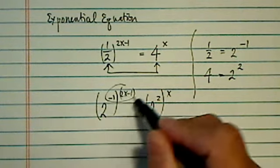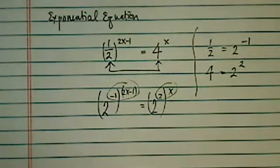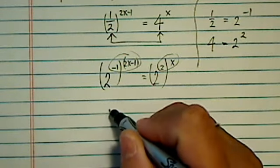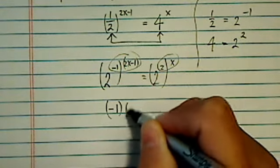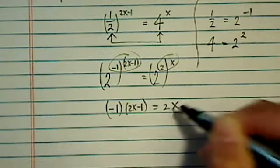When the exponentials look like they're about to multiply, multiply them. That's one of the rules for exponentials. So you have minus 1 times 2x minus 1 equal to 2x.